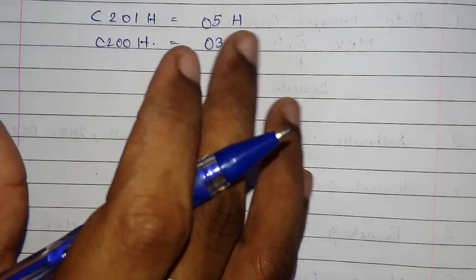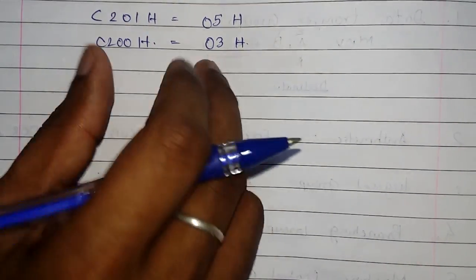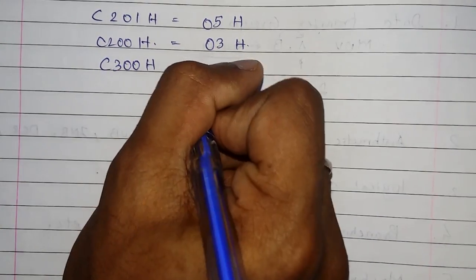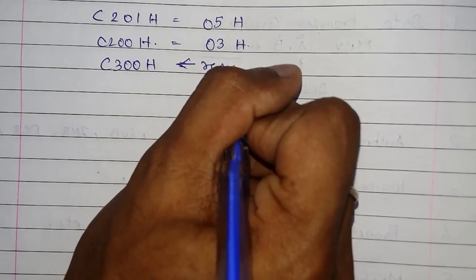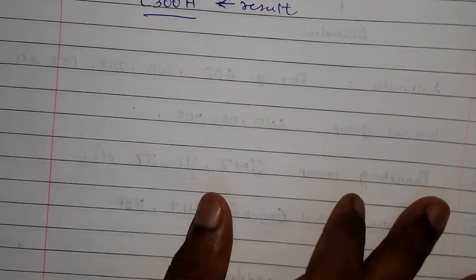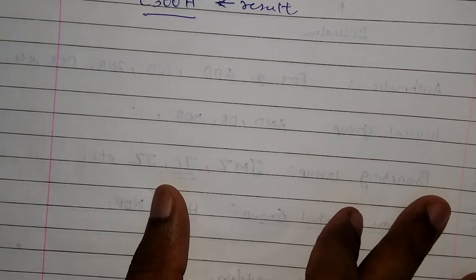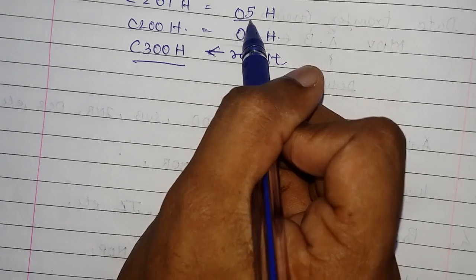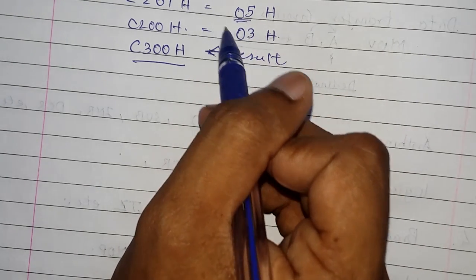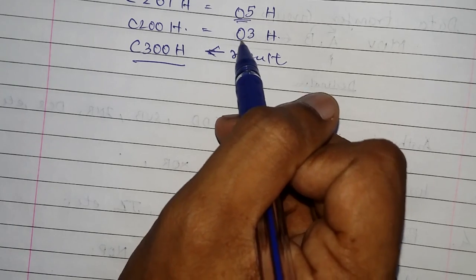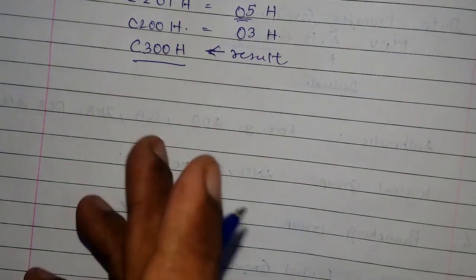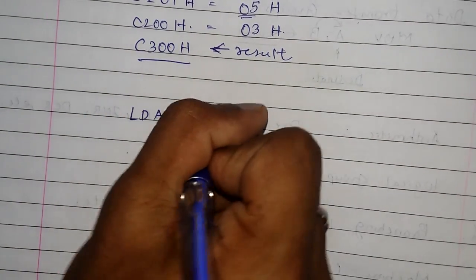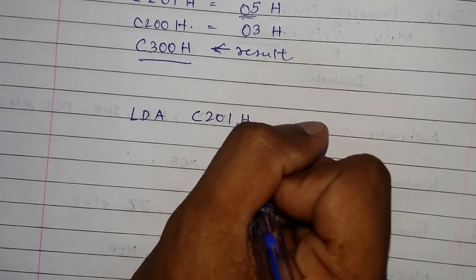This is a very simple example so that you guys can understand. We have to store the answer in the memory location C300H, where our result will be stored. First, we are going to move the data into the accumulator, then subtract 03 from the accumulator, and then store the data in C300H.